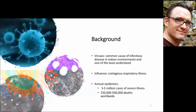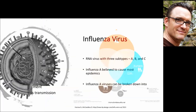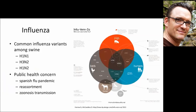Influenza virus is an RNA virus with three subtypes: A, B, and C. Subtype A is believed to cause most epidemics. The influenza A virus can be further broken down into subtypes based on surface proteins — hemagglutinin and neuraminidase — so the H1N1s and H3N2s. This is a public health concern for us.